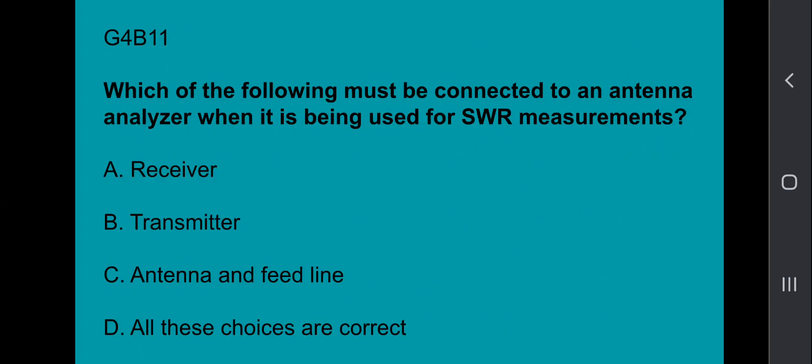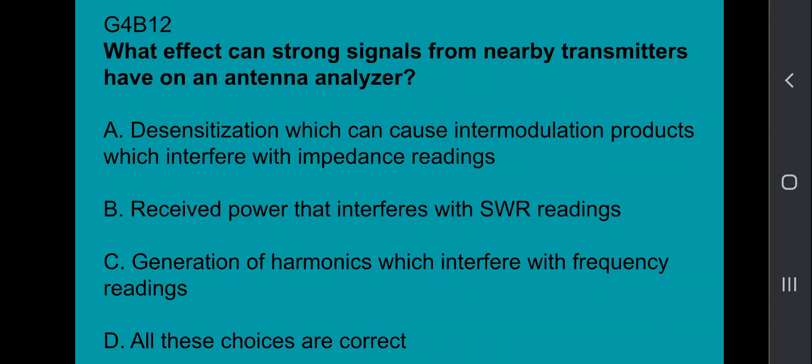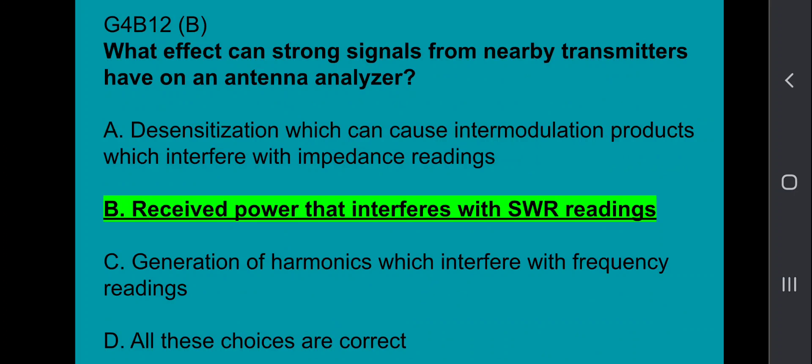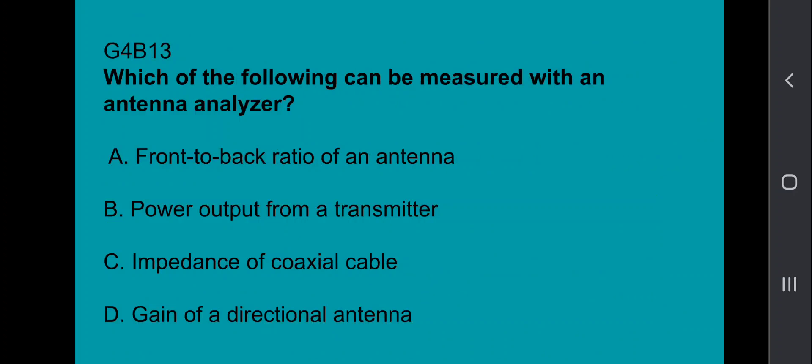G4B11, which of the following must be connected to an antenna analyzer when it is being used for SWR measurements? That's antenna and feed line. G4B12, what effect can strong signals from nearby transmitters have on an antenna analyzer? Received power that interferes with SWR readings. G4B13, which of the following can be measured with an antenna analyzer? That's impedance of coaxial cable.